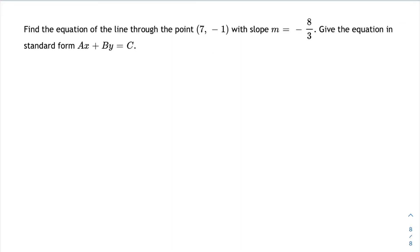Find the equation of the line through the point (7, -1) with slope m equals -8/3. Give the equation in standard form ax plus by equals c.